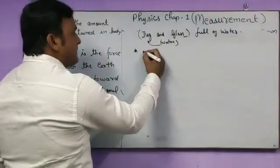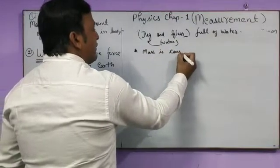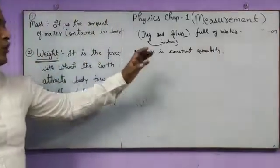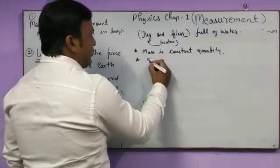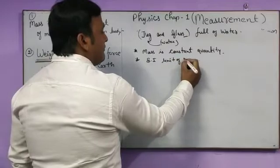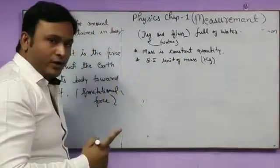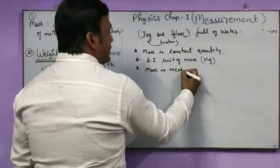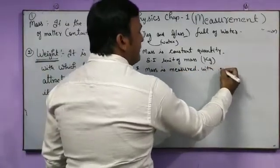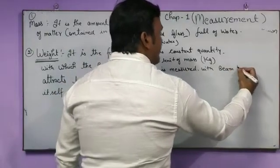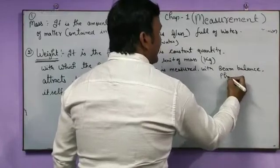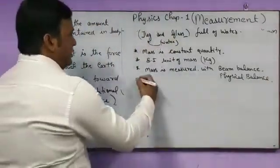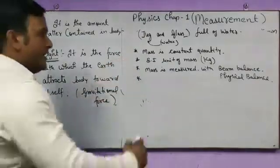Now some key points for mass. Mass is a constant quantity. It is measured in kilograms as a unit of mass. It is measured with the help of beam balance or physical balance.